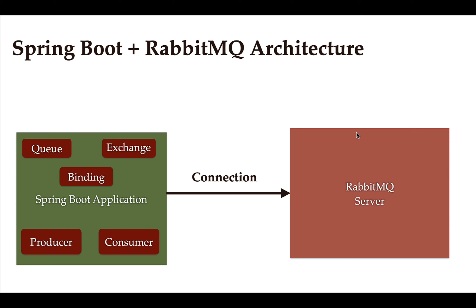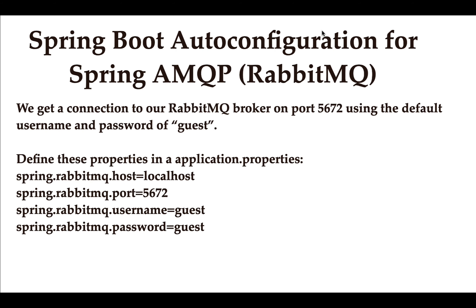In order to establish the connection between the Spring Boot application and the RabbitMQ server, we're going to use Spring Boot auto-configuration. Spring Boot auto-configuration helps us reduce a lot of configuration. We get a connection to our RabbitMQ broker on port 5672 using the default username and password of 'guest'.